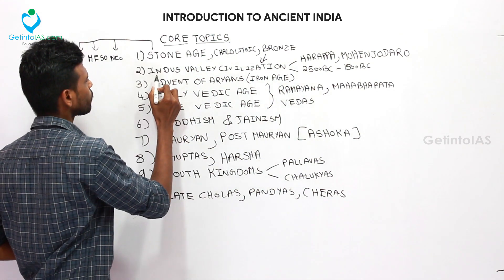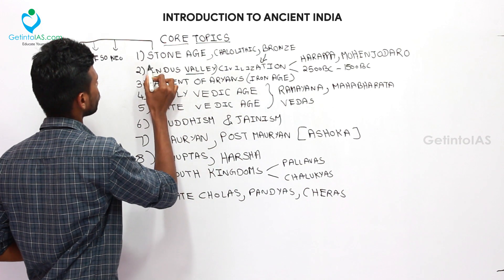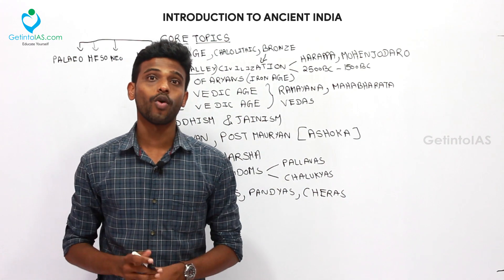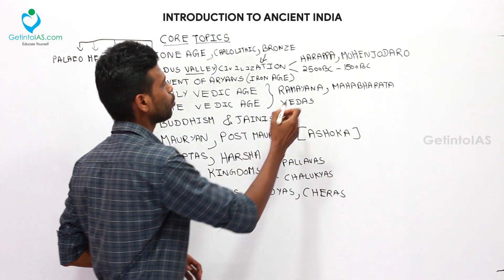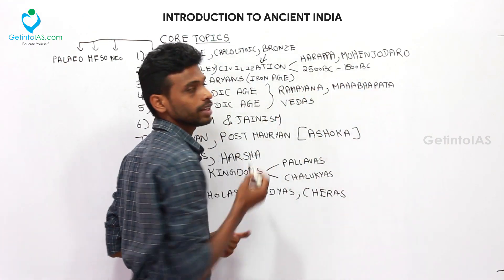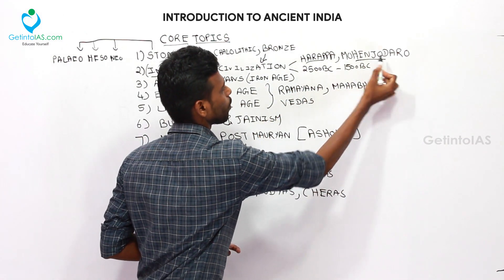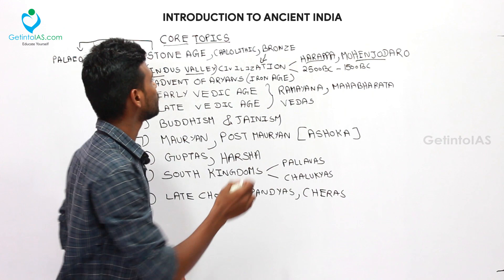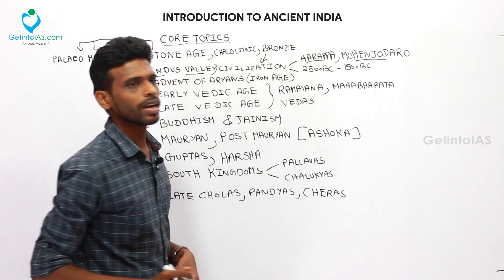Indus Valley civilization occurred around the valleys of the Indus. It was spread over an area of 1.5 million square kilometers and it happened around 2500 BC to 1500 BC. The notable cities were Harappa and Mohenjo-daro. The first site to be discovered was Harappa, so this Indus Valley civilization is also called Harappan civilization.